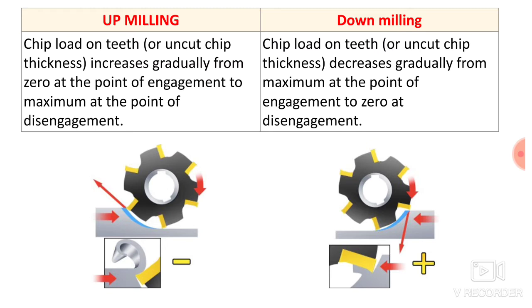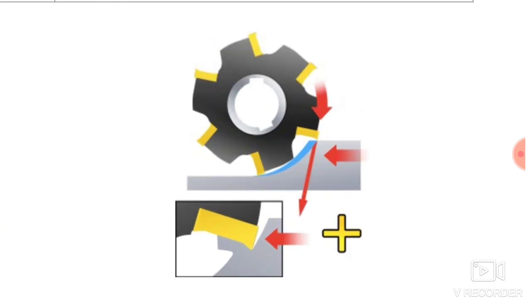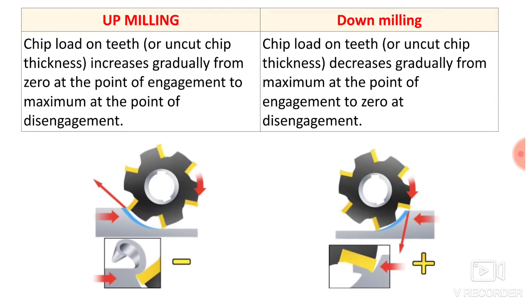In down milling, the chip load on the teeth or uncut chip thickness decreases gradually from maximum at the point of engagement to zero at the point of disengagement. Suddenly the tip of the insert comes in contact with the workpiece and the chip thickness is maximum at the start. The load on the insert is also maximum at the start and then gradually reduces to zero.